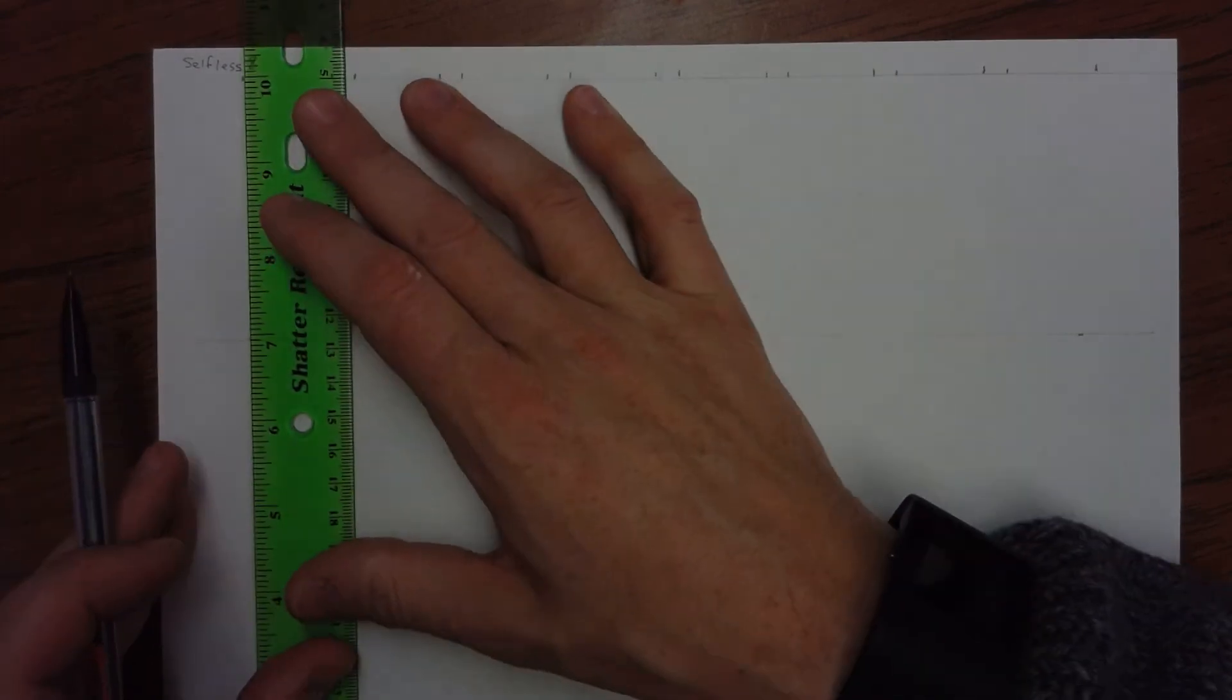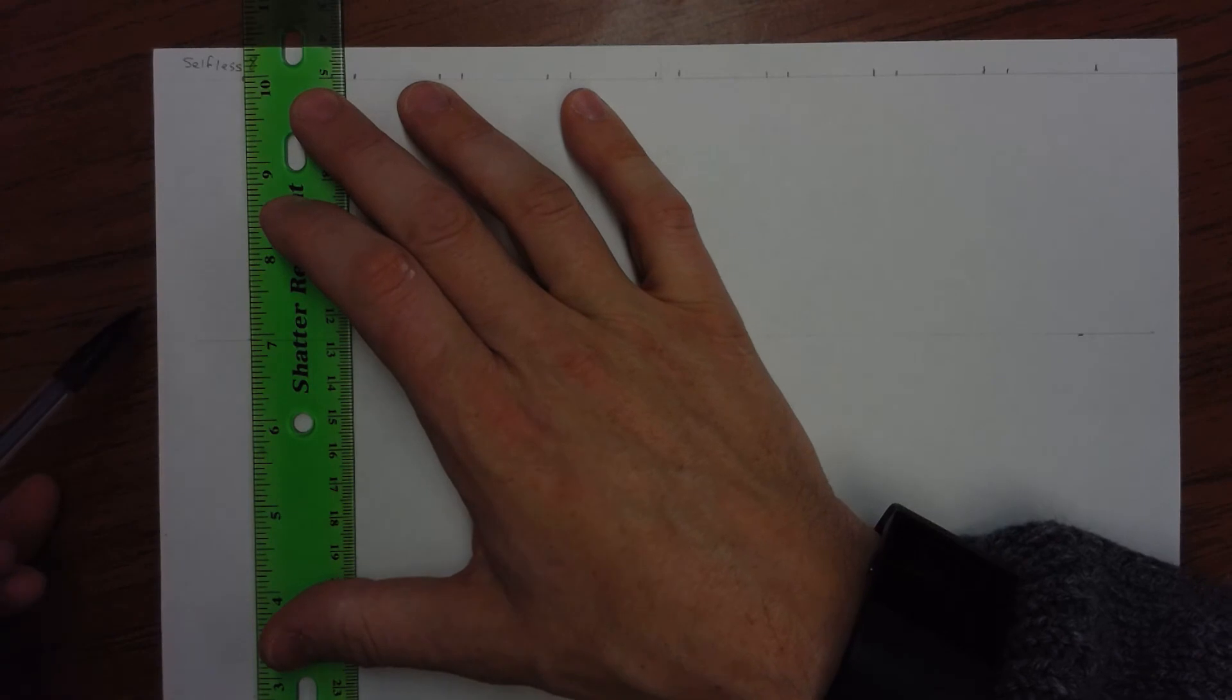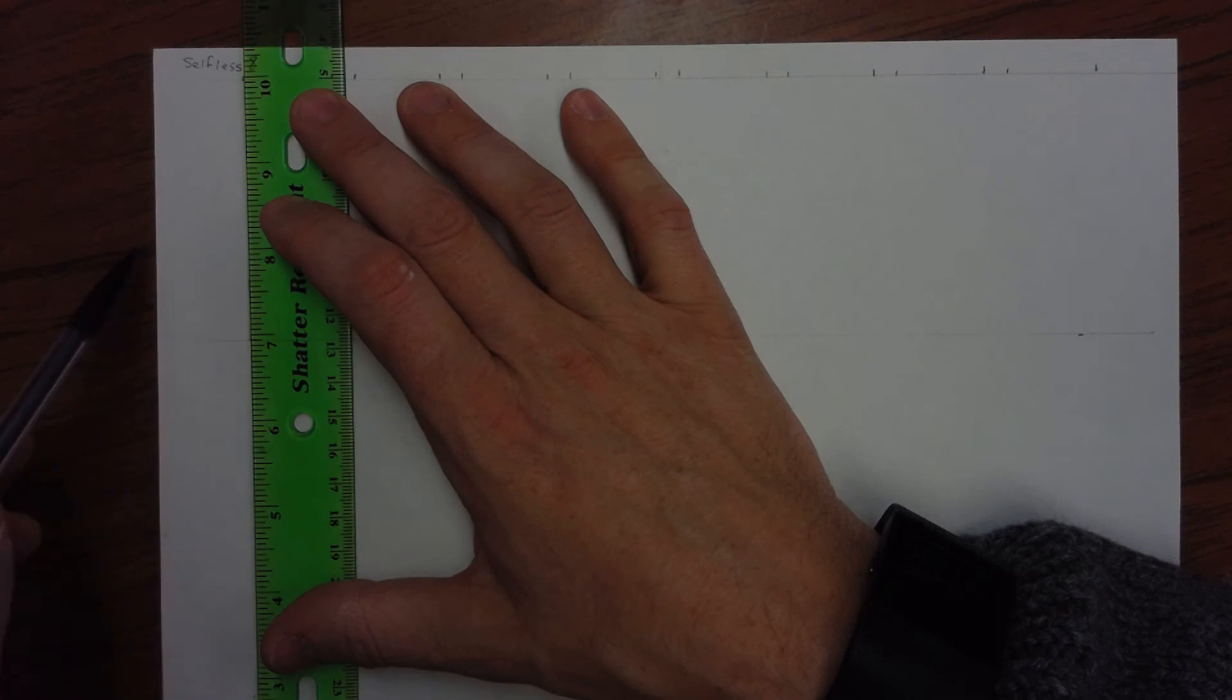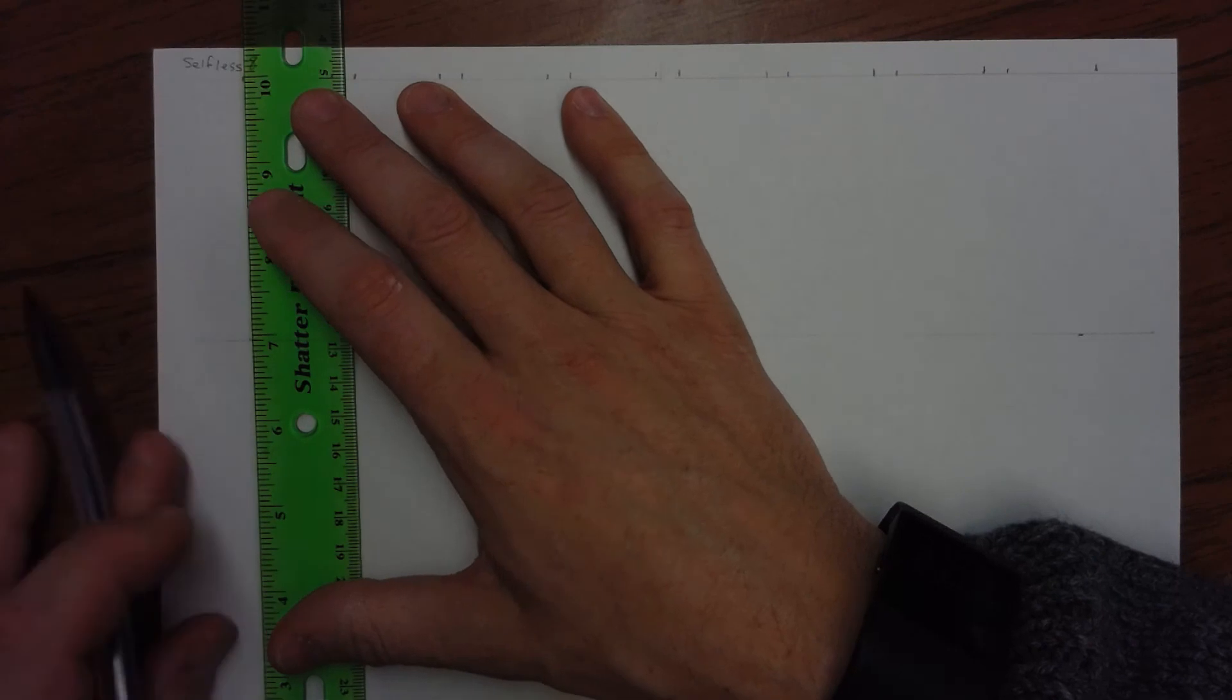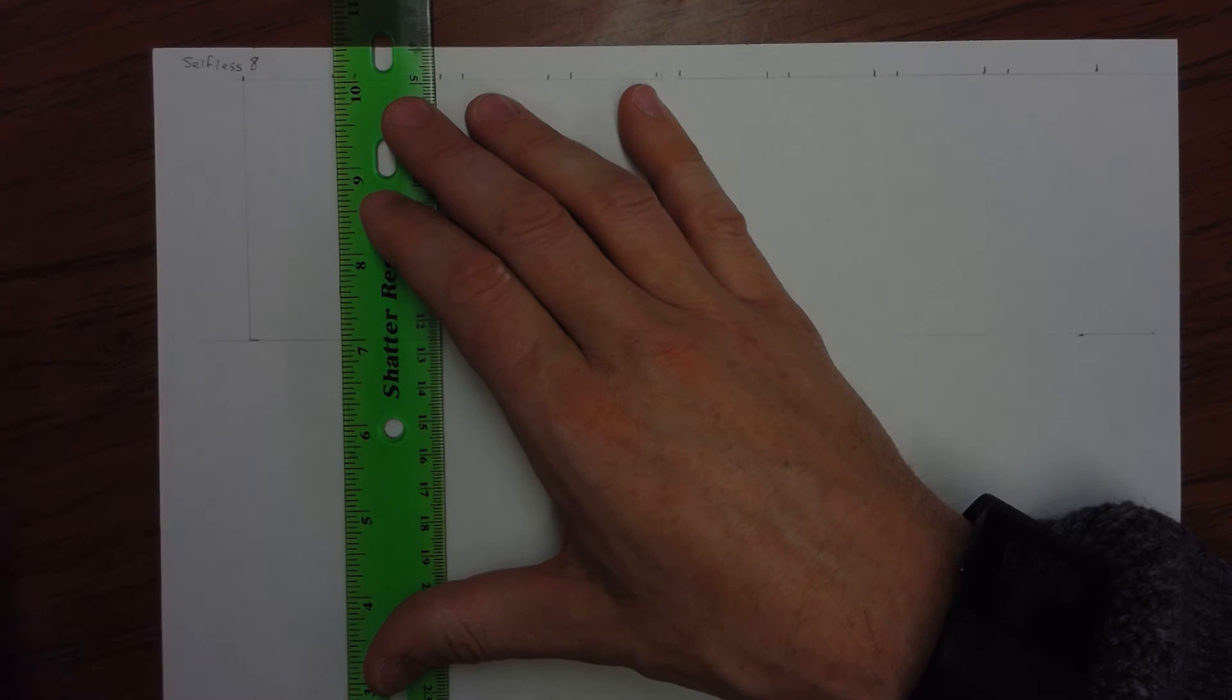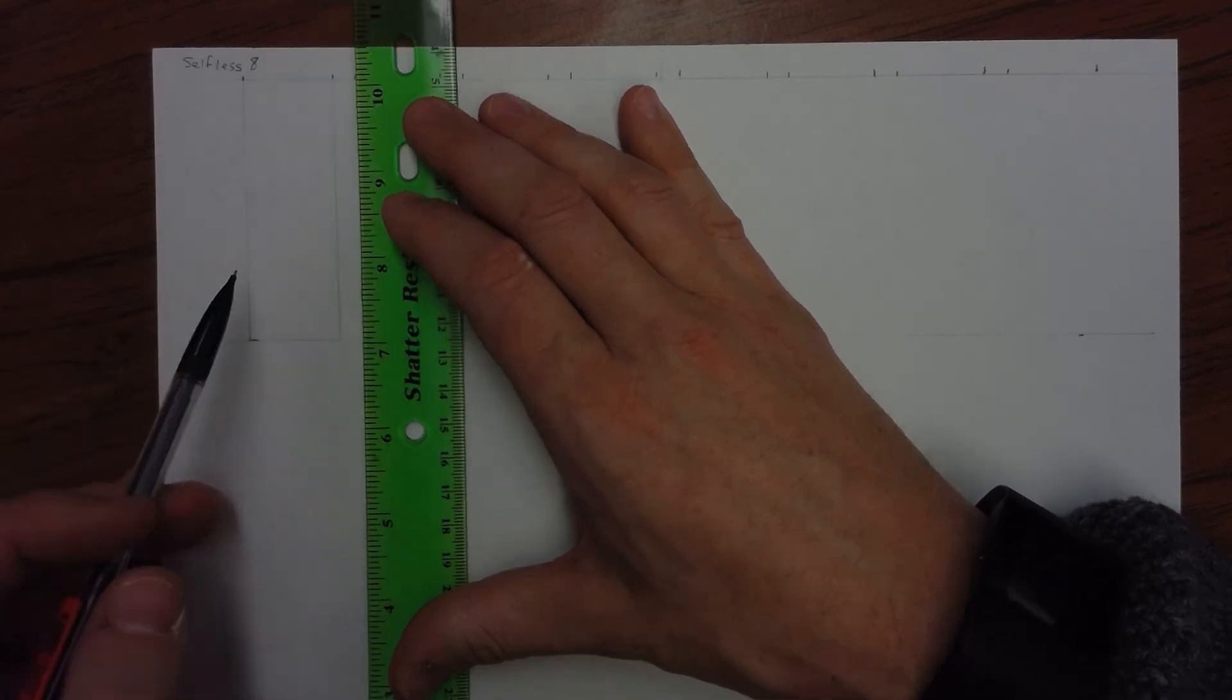And then, using this mark, looking at the side of the paper. Make sure the side of the paper and the ruler are parallel. And then I draw a line from this mark down to my line. This needs to be light as well, because most of it will be erased. I'm going to do that for all my marks.